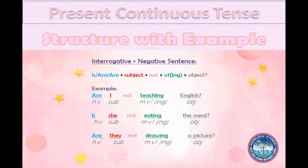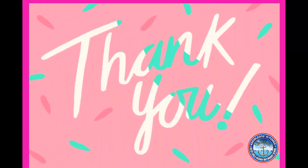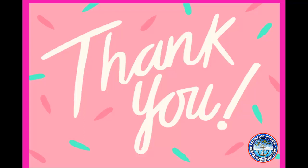Next, we make negative interrogative sentences. The structure of the interrogative sentence remains the same, and we add not to make it negative. Structure: helping verb first (because it is interrogative), plus subject, plus not (because it is negative), plus verb -ing form, plus object. Examples: Am I not teaching English? Is she not eating the meal? Are they not drawing a picture? Now you are ready to make present continuous sentences in every sentence type. Give it a try at home. Thank you so much.